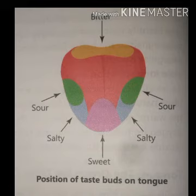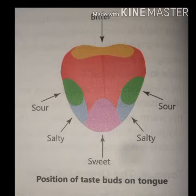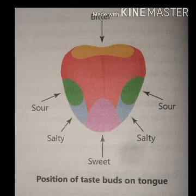These taste buds have lots of receptors, and those receptors are called gustatory receptors. The function of gustatory receptors is to detect this signal. These gustatory receptors have very small hair-like projections — very small hair-like outgrowths — that take this signal to nerve cells.